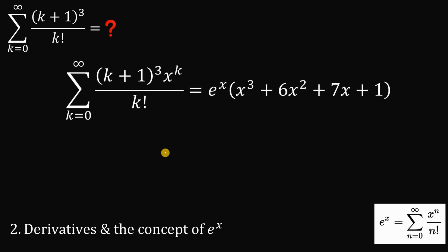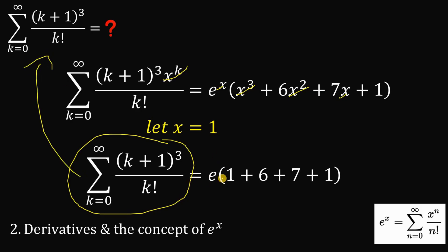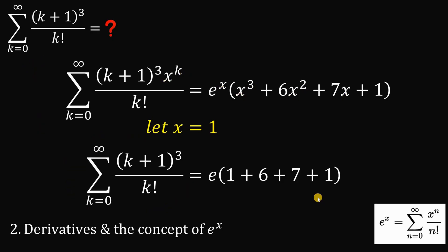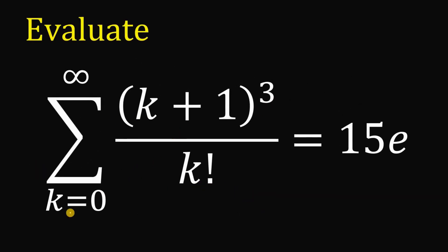The last step is to set x=1. Then x^k=1, e^x=e, and all powers of x equal 1. So the summation of (k+1)³/k! from k=0 to infinity equals e·(1+6+7+1) = e·15 = 15e. That is the answer, confirmed by both methods.